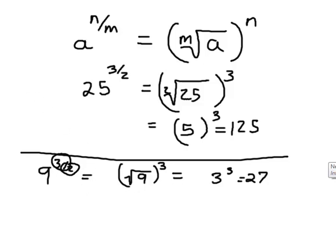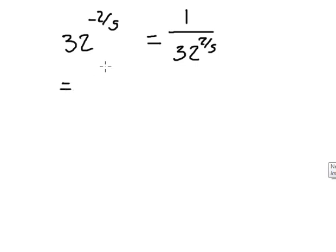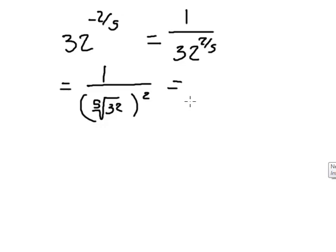Now let's do one involving a negative exponent: 32 to the negative 2/5. A key thing to remember is that a negative exponent does not make your answer negative — it has nothing to do with the sign of the answer. What it means is 32 to the negative 2/5 equals 1 over 32 to the 2/5. Your first step should be to get rid of the negative exponent by writing it as 1 over whatever it is.